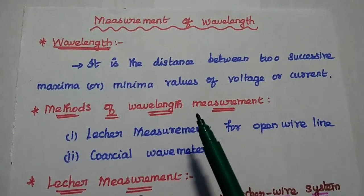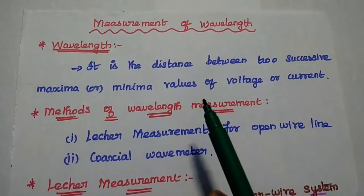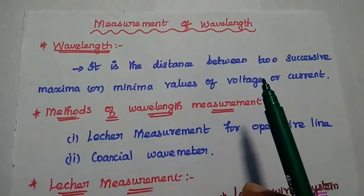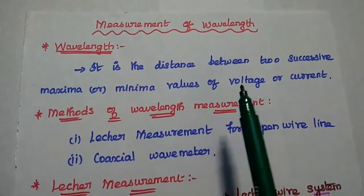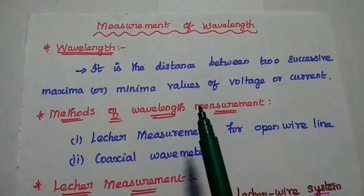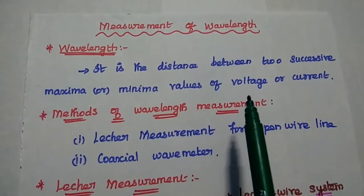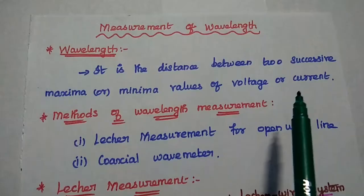Dear students, now we are going to discuss measurement of wavelength on transmission line. Wavelength is the distance between two successive maxima or minima values of the voltage or current on the transmission lines.